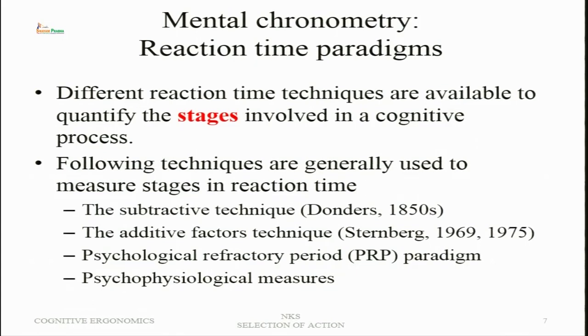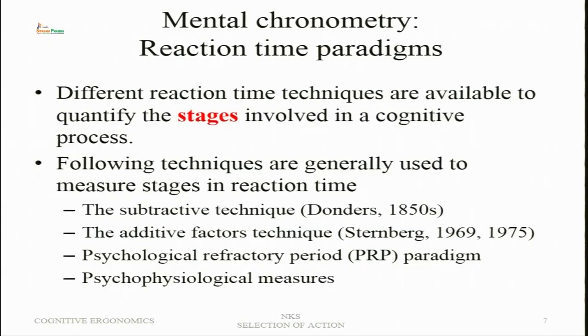In the subtractive technique, we find the reaction time for two different tasks where the processes of one task are contained within the other. In the additive factors technique, different stages are influenced by different factors. If certain variables influence one stage but do not affect another stage of processing, we say it is an additive situation. We will also talk about the psychological refractory period paradigm and psychophysiological measures, which relate behavioral measures of reaction time to brain processes.